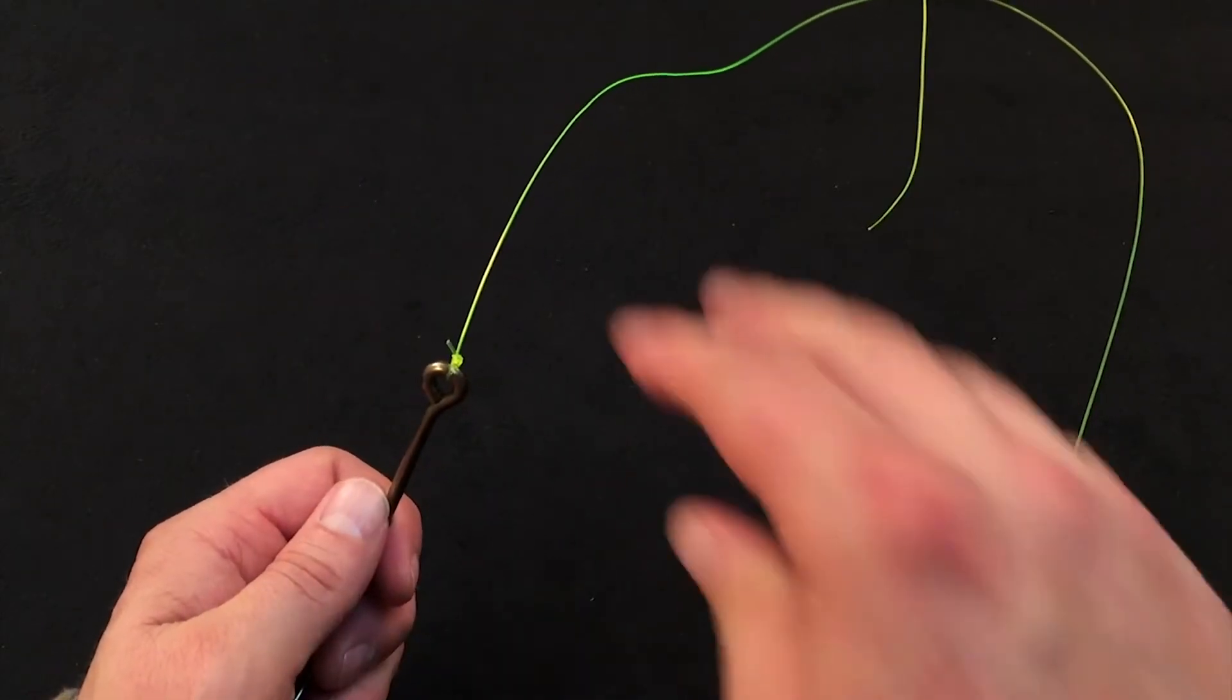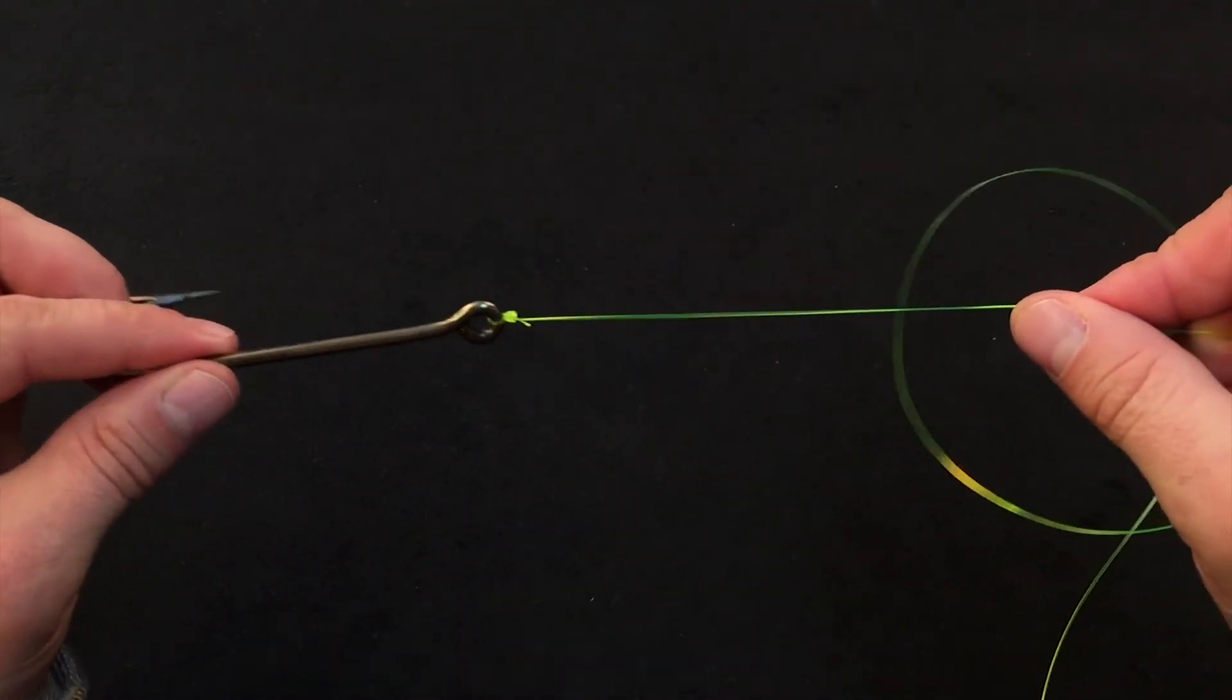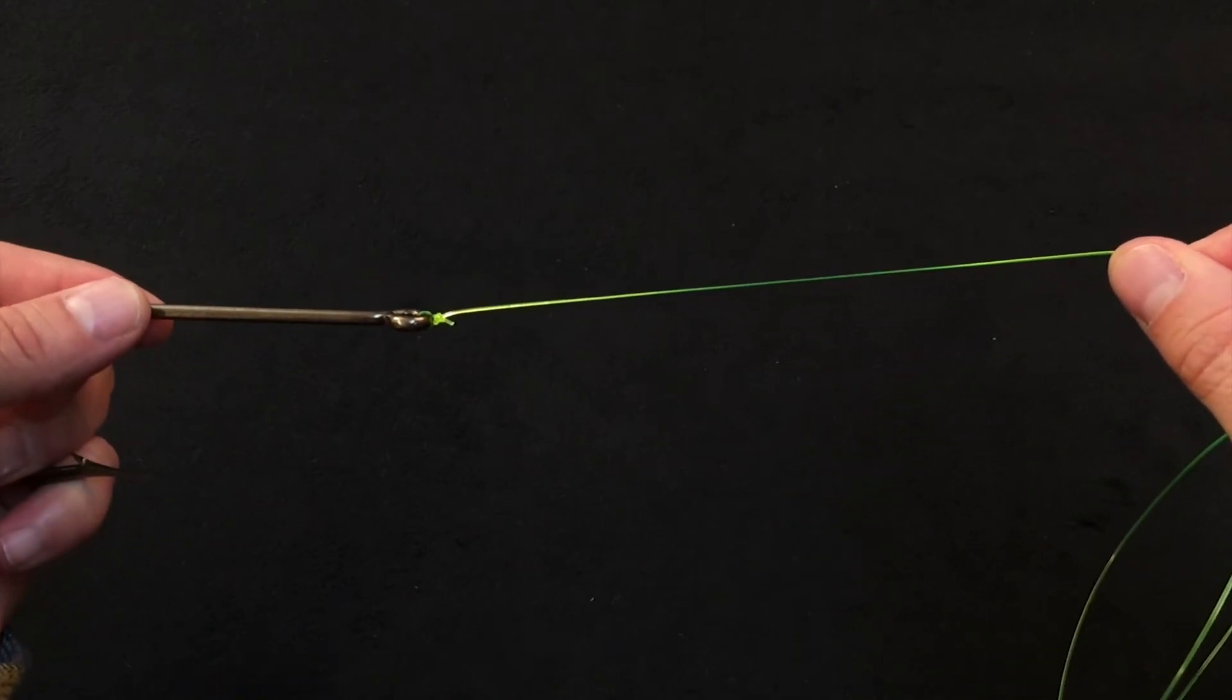You can trim your tag relatively close. And that's your Pitson knot.